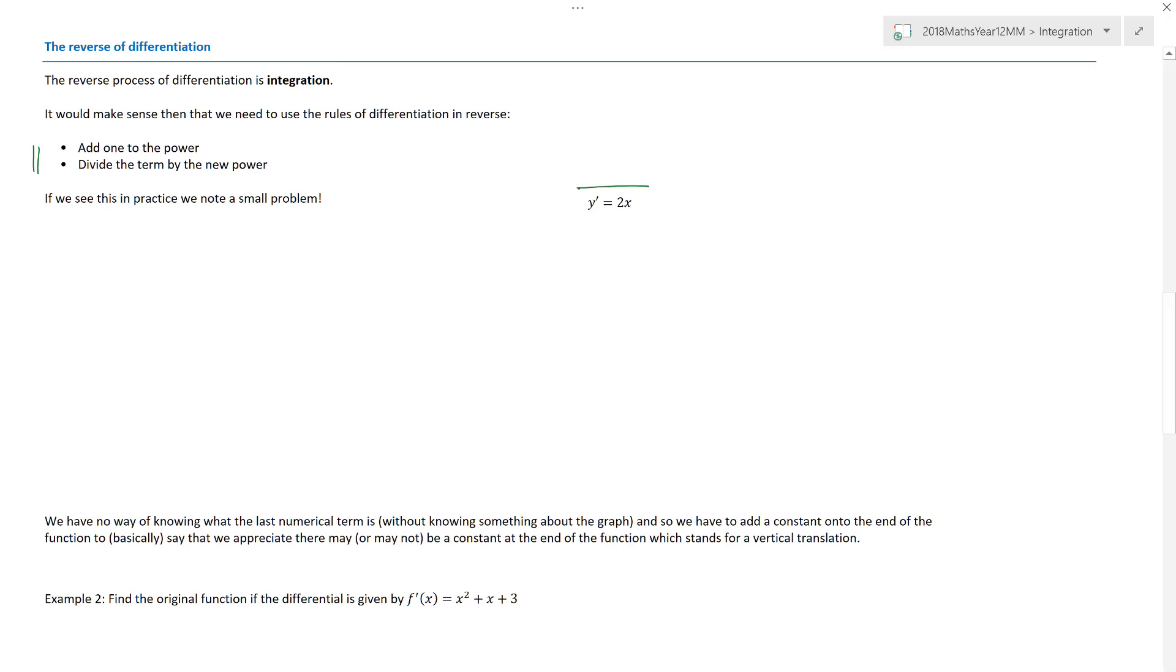So we already know that we've got three functions that we're going to try and get back to. We know that the differential function y dash was equal to 2x. So let's see what happens. That would suggest that y, because we're going back to my original function, we've got 2x. It says add 1 to the power. Well, the power is currently 1. Add 1 to the power is 2 and divide the whole term by 2. So that gives me that y is equal to x squared. Thank you very much. That's it.